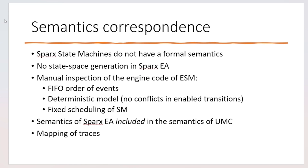An interesting observation is that since the order of scheduling is fixed, a SPARX EA simulation may miss some executions present in the real system. This is one aspect that can be improved with formal methods — UMC generates the state space for all possible schedulings and all conflicts, covering all possible traces of the real system. Thus, the semantics of UMC includes the semantics of SPARX EA. Whenever formal verification produces a trace, we show how it can be reproduced in SPARX EA, further validating the semantics correspondence.